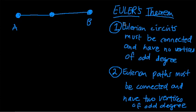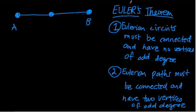All right, so in this video we're going to start proving Euler's theorem. The theorem we're highlighting right here is that one, if you have a circuit, it must be connected and have no vertices of odd degree, and two, a path must be also connected and have two vertices of odd degree. So we're just going to start this proof in this video and then finish it up in a second video.